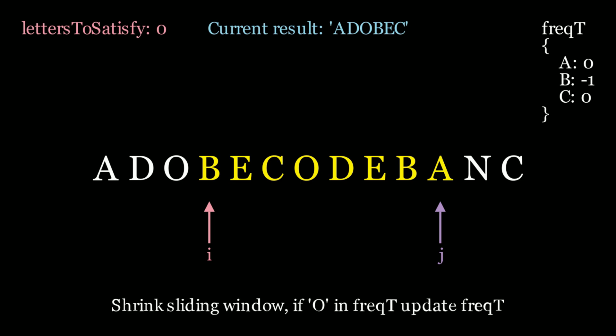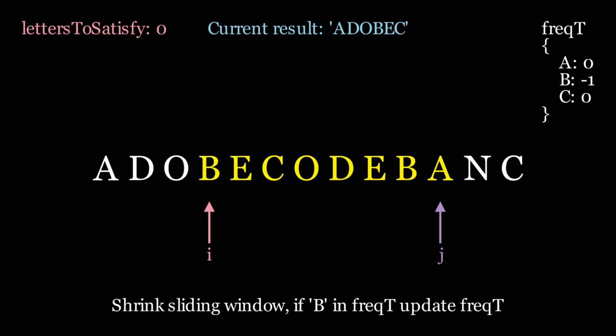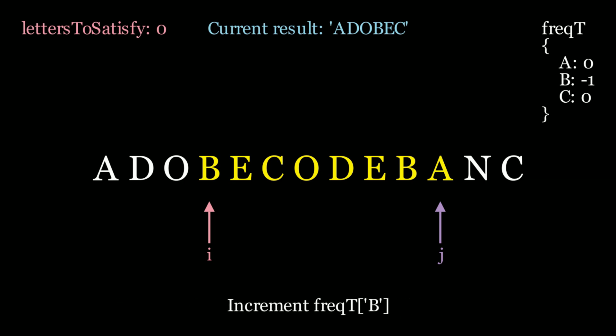We move i along. Is letters to satisfy still equal to 0? It is, so this substring is a result, but it's not the smallest, so we don't update. We shrink the current window again. b is in my hash map, so I need to increment the frequency of b from negative 1 to 0, because I'm giving up a b as I move i.